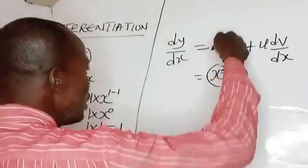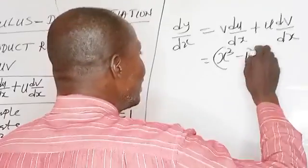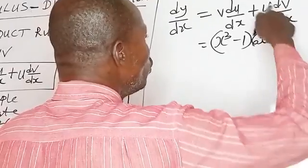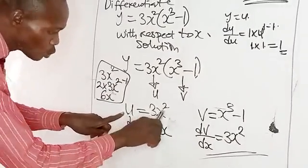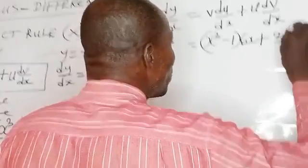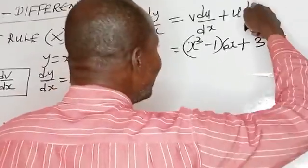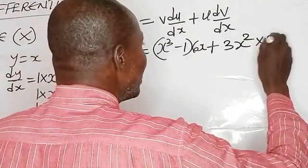Substituting into the formula: dy/dx equals v times du/dx plus u times dv/dx. That is (x cubed minus 1) times 6x, plus 3x squared times 3x squared.